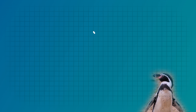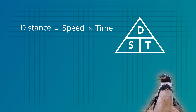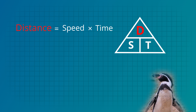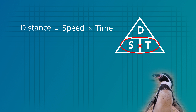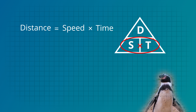To remember the three rules let's use a DST triangle. Notice that the D, S, and T are in alphabetical order. First let's find the distance rule. Highlight the D. Because the S and T are alongside each other we'll multiply. So distance equals speed multiplied by time.